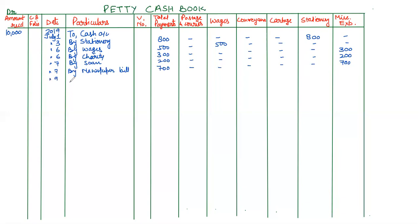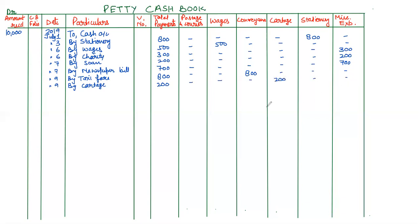The next date is the 9th — we are paying taxi fare and cartage. By taxi fare, this amount is 800 rupees, so first this amount will come in the total payment column. Taxi fare is one of the conveyance expenses, so it will come in the conveyance column also. Next on the same day is cartage — the amount is 200 rupees. This amount will come in the total payment column, and then the concern column. Cartage is one of the modes of transportation and will come in its separate column.